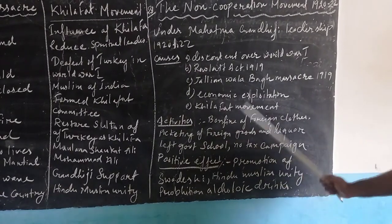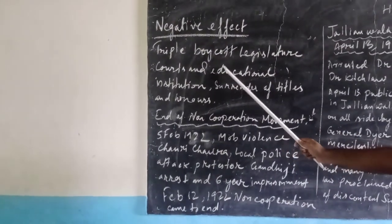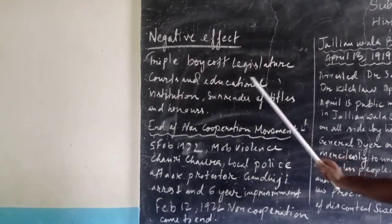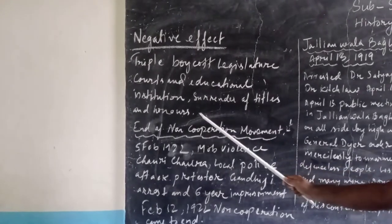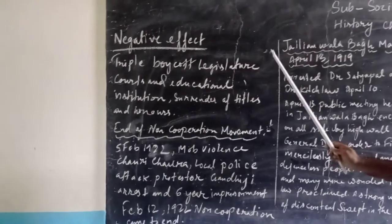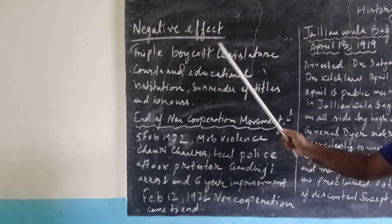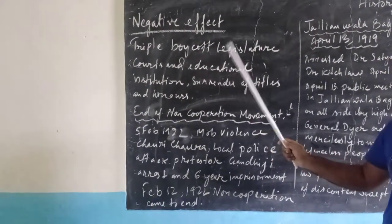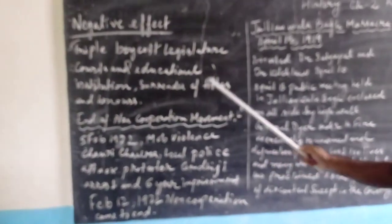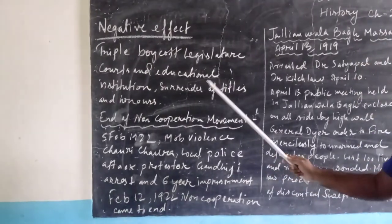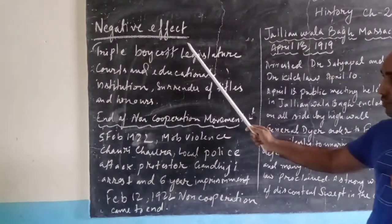The negative effects of the Non-Cooperation Movement included a triple boycott of the legislature, courts, and educational institutions, as well as the surrender of titles and honours. Although these are listed as negative effects, they also necessitated some positive steps. Due to the boycott of educational institutions and courts, national educational institutions were set up as an alternative.